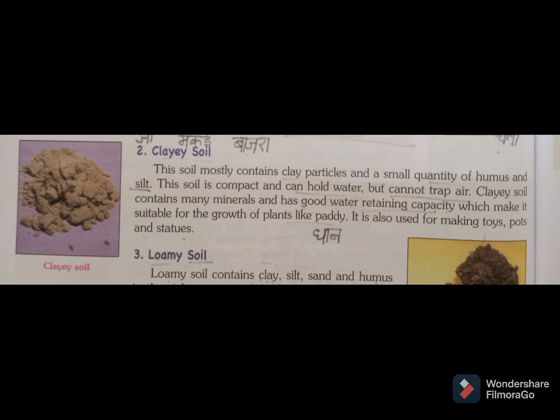The next type is clay soil. This soil mostly contains clay particles and a small quantity of humus and silt. This soil is compact and can hold water but cannot trap air. Clay soil contains many minerals and has good water-retaining capacity, which makes it suitable for the growth of plants like paddy. It is also used for making toys, pots, and statues because of its high binding capacity.